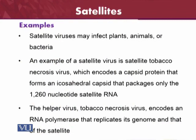Examples of satellite viruses may infect plants, animals, and bacteria. One example is the tobacco necrosis satellite virus, which encodes a capsid protein forming an icosahedral capsid that packages only 1,260 nucleotides of satellite RNA. The tobacco necrosis virus, acting as the helper virus, encodes an RNA polymerase that replicates its own genome and also the genome of the satellite virus.